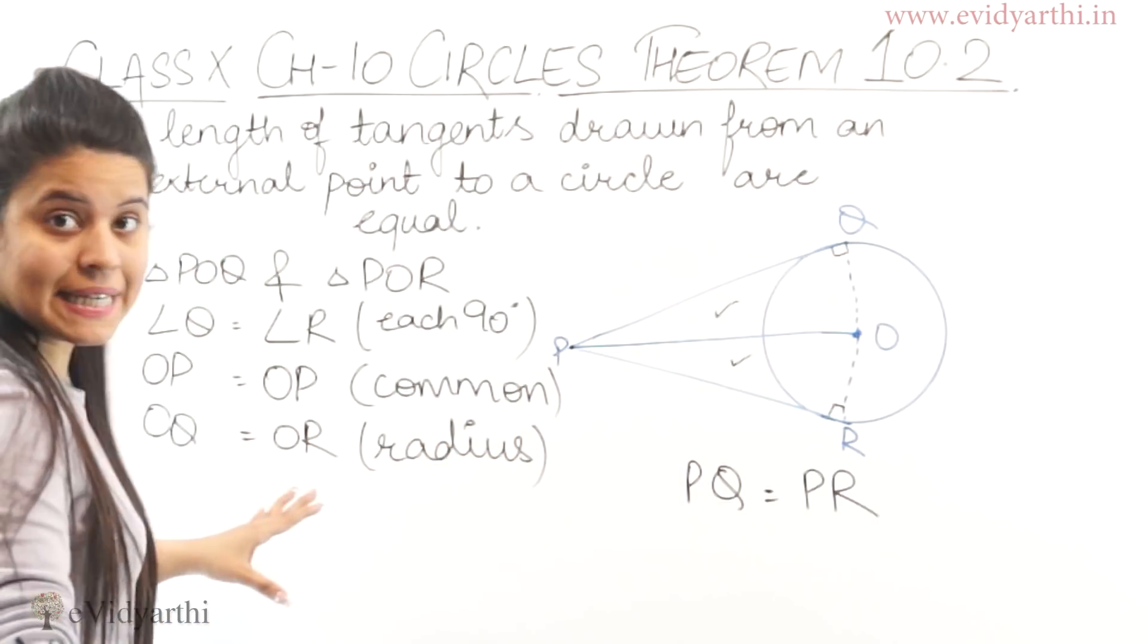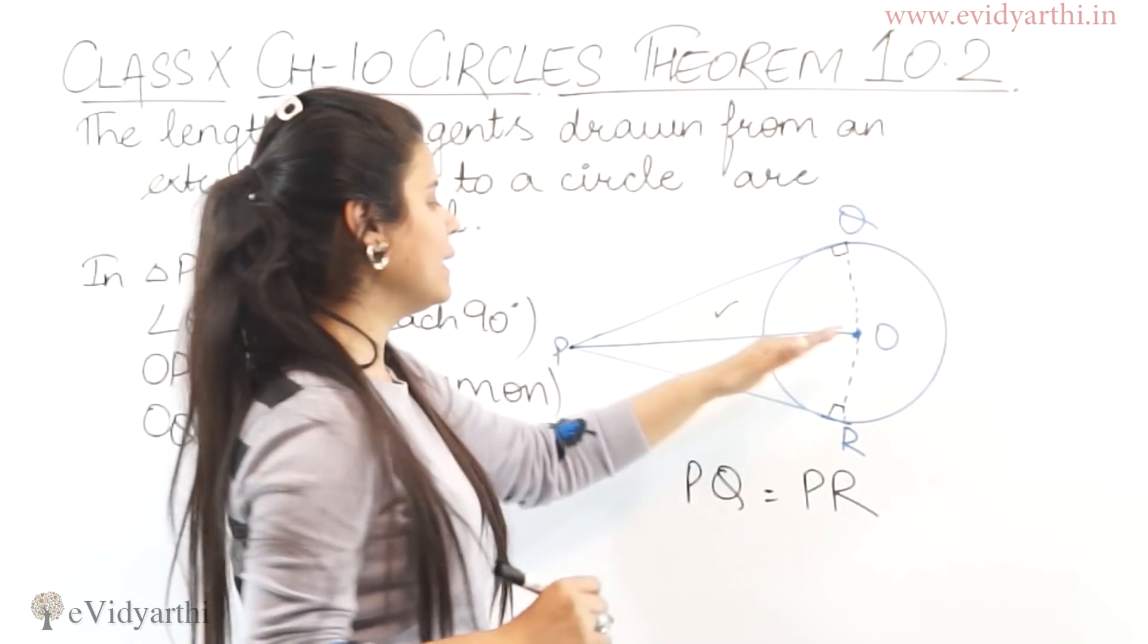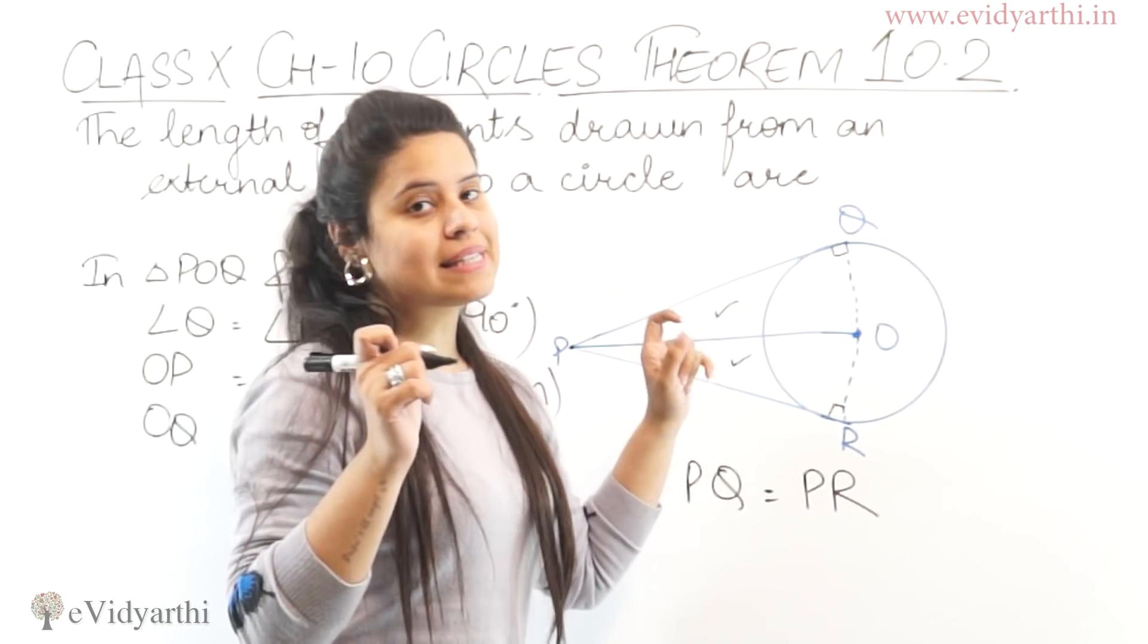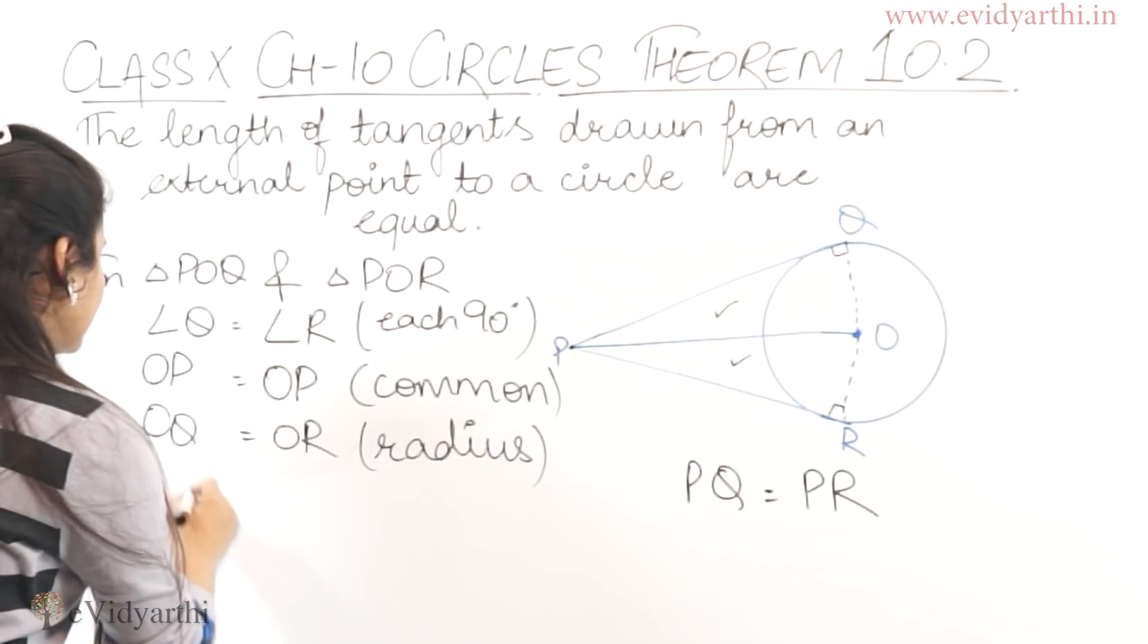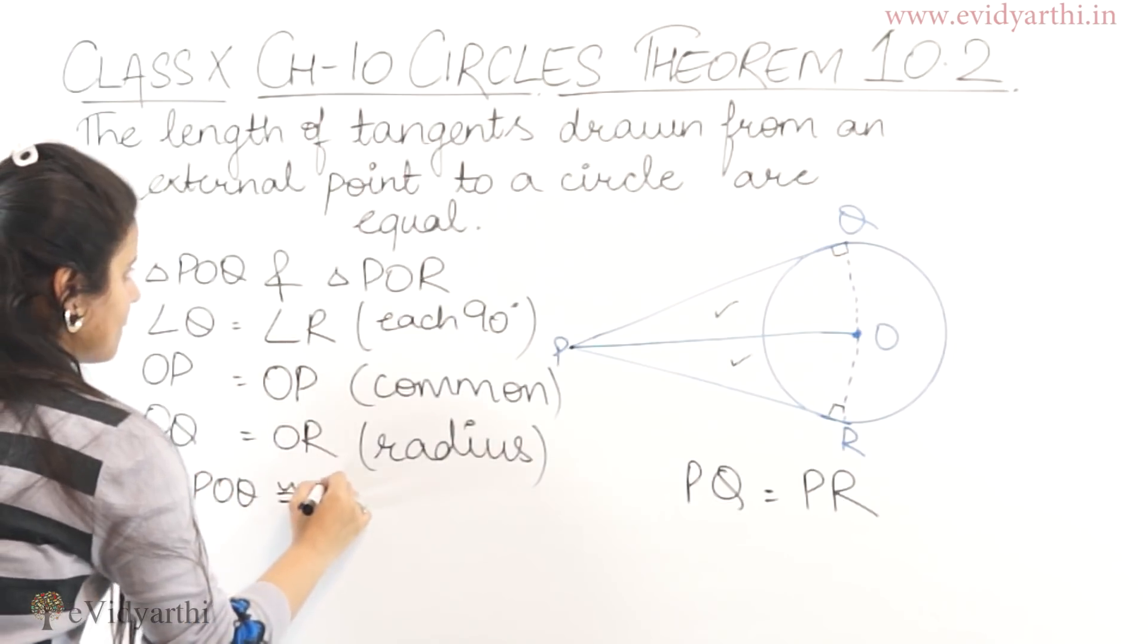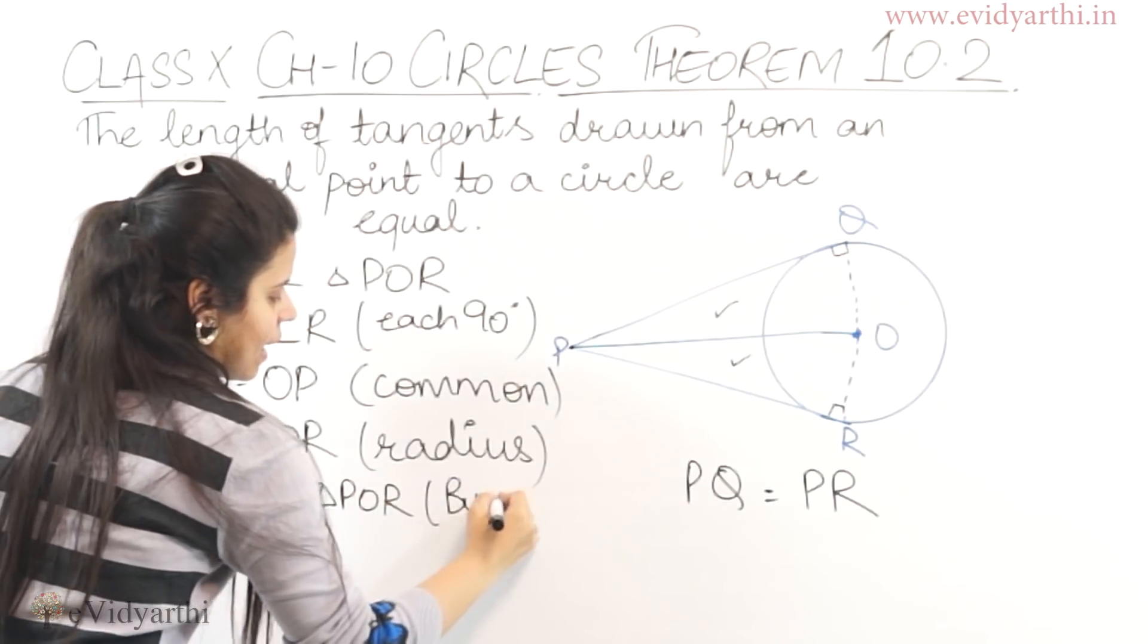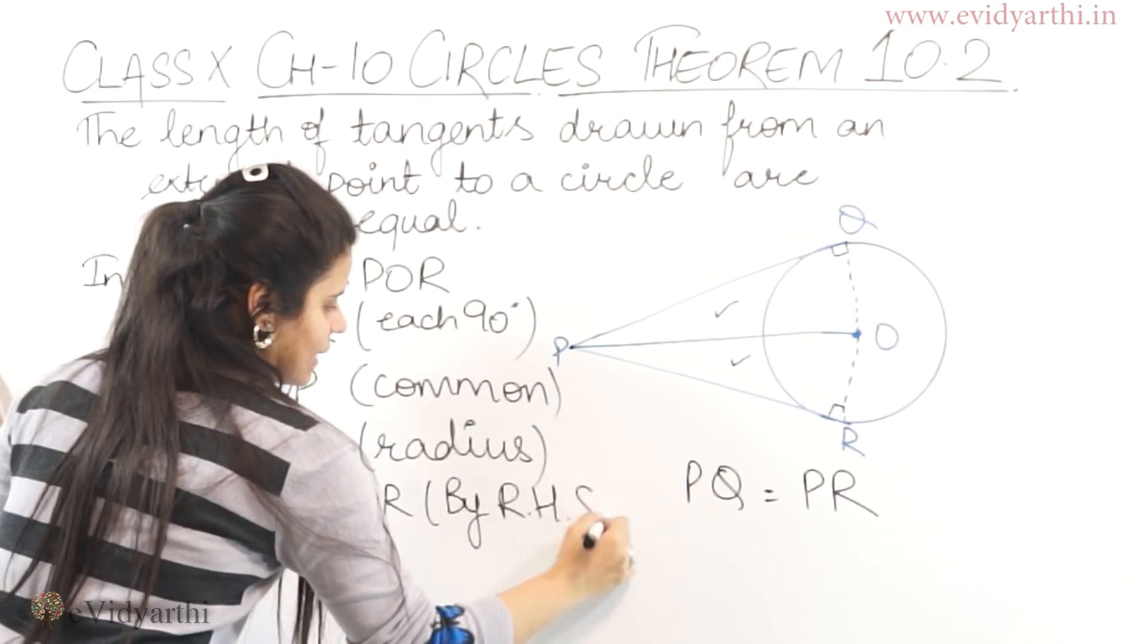So there are three things we have: a 90 degree angle, and OP which we have taken as common, which is the hypotenuse of both triangles. Therefore, these two triangles we have to prove congruent.